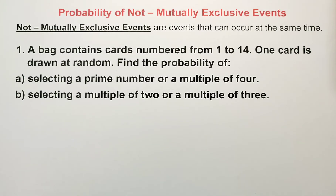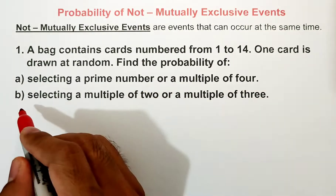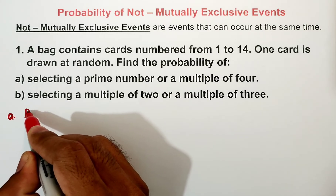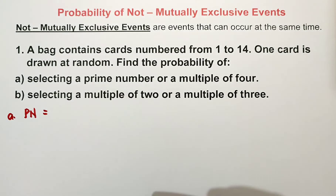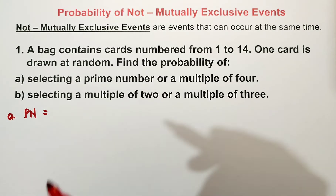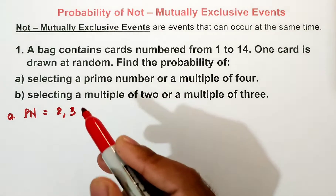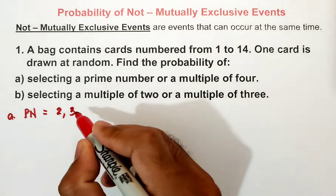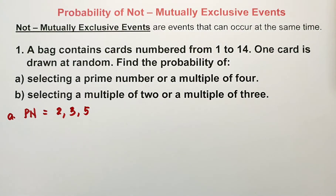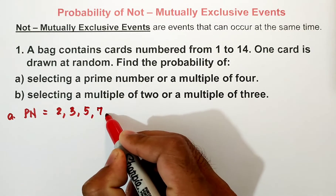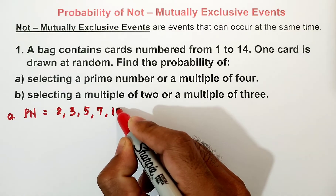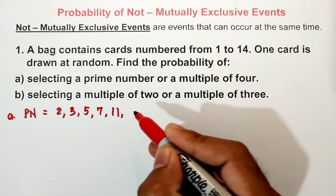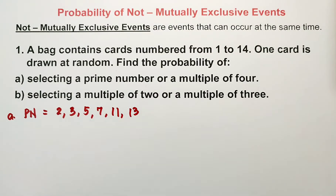For letter A, prime number or a multiple of 4. A prime number is a natural number greater than 1 where the factors are 1 and the number itself. Starting from 1 to 14, note that 1 is a special number and not included. So we have 2, 3, 5, 7, 11, and 13 — that gives us 6 prime numbers.